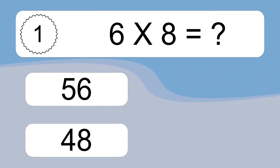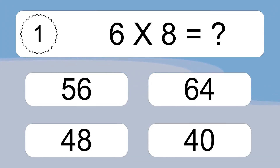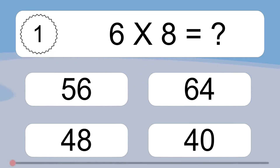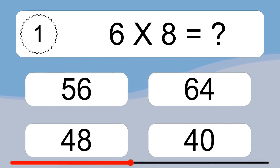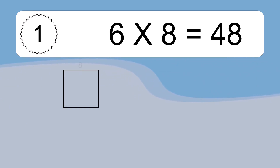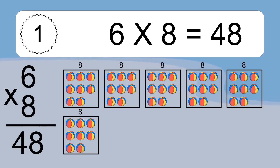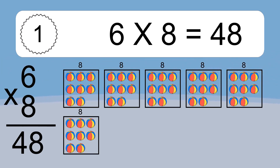Six times eight equals what? Six times eight equals 48. We have six boxes, and each box has eight colorful balls inside. If you count all the balls in all the boxes together, you will have six times eight balls. This equals 48 balls.